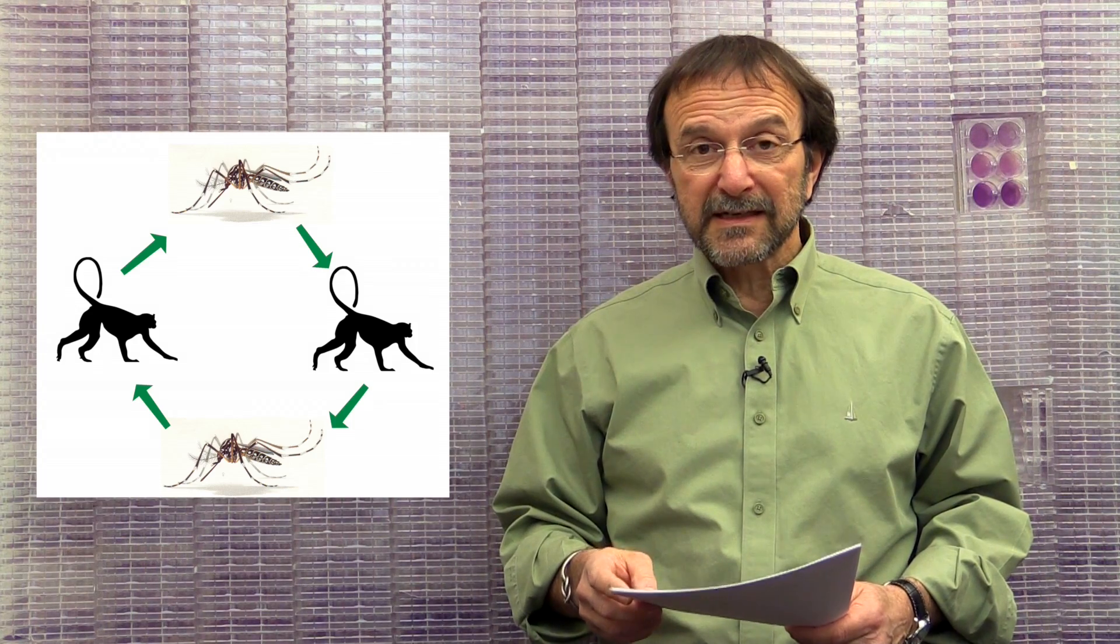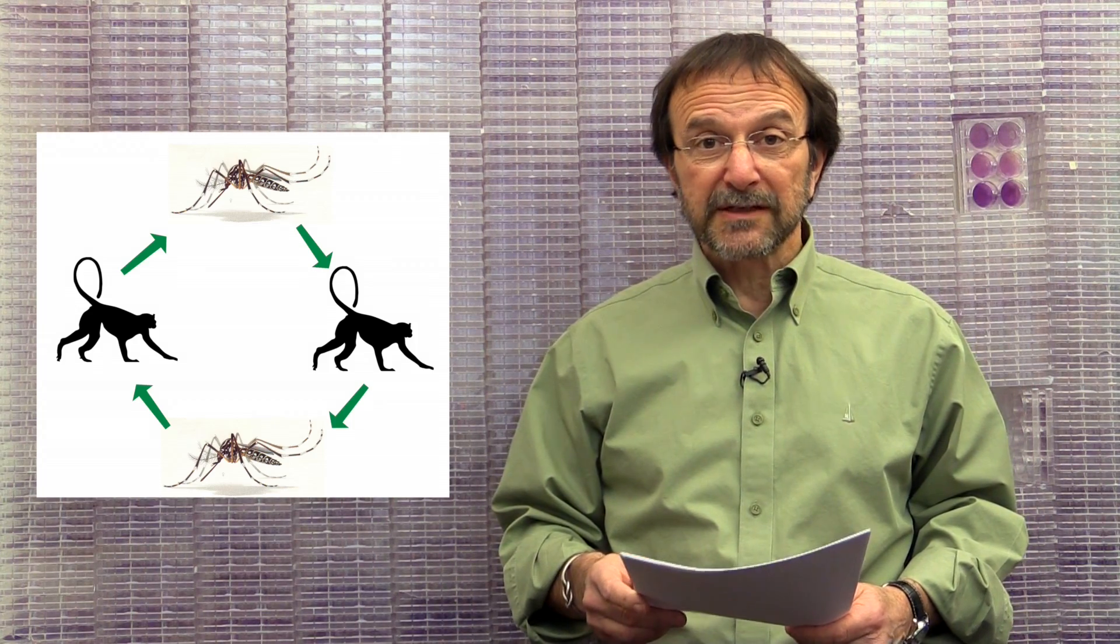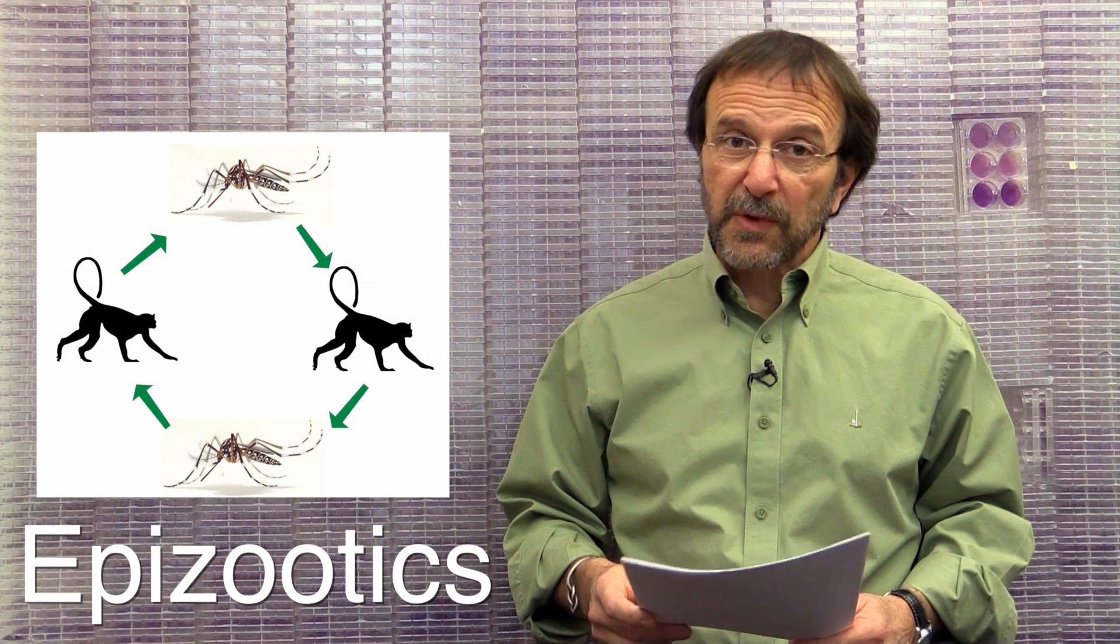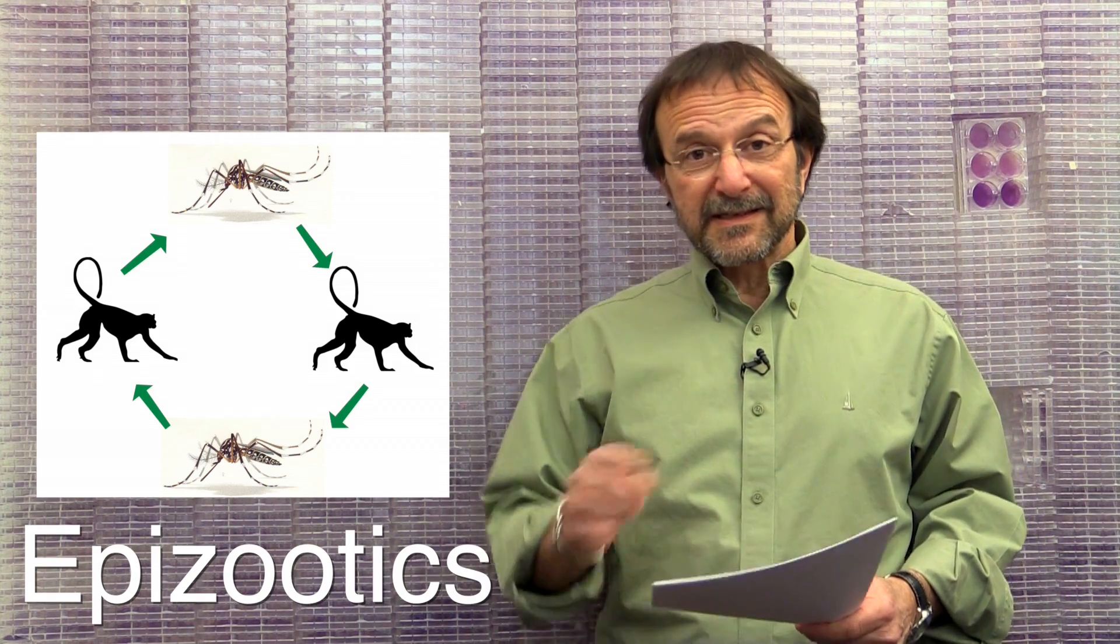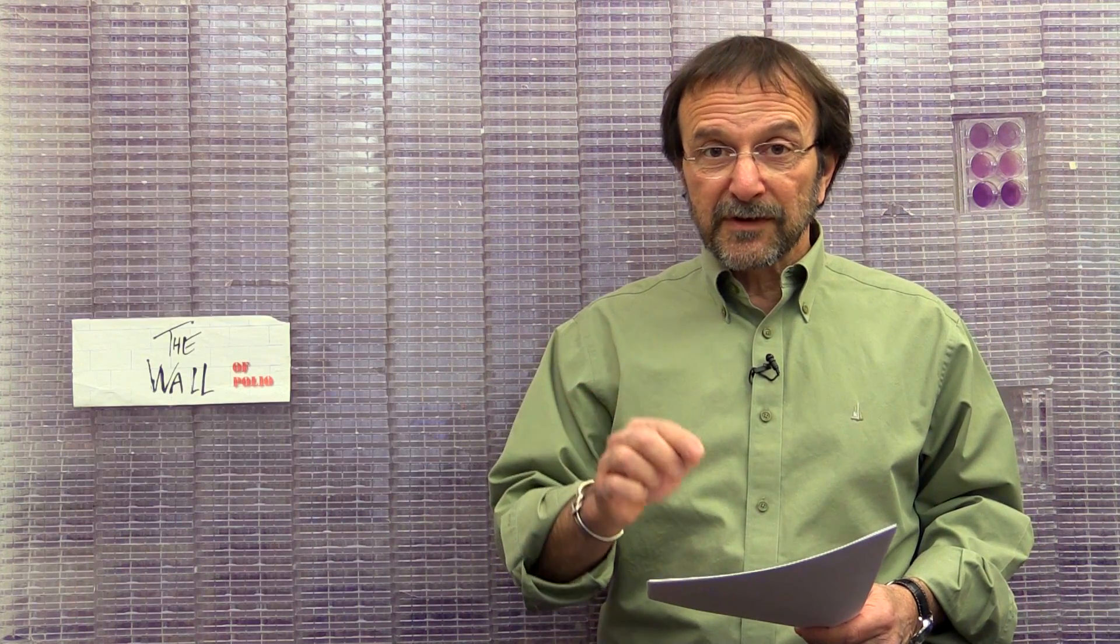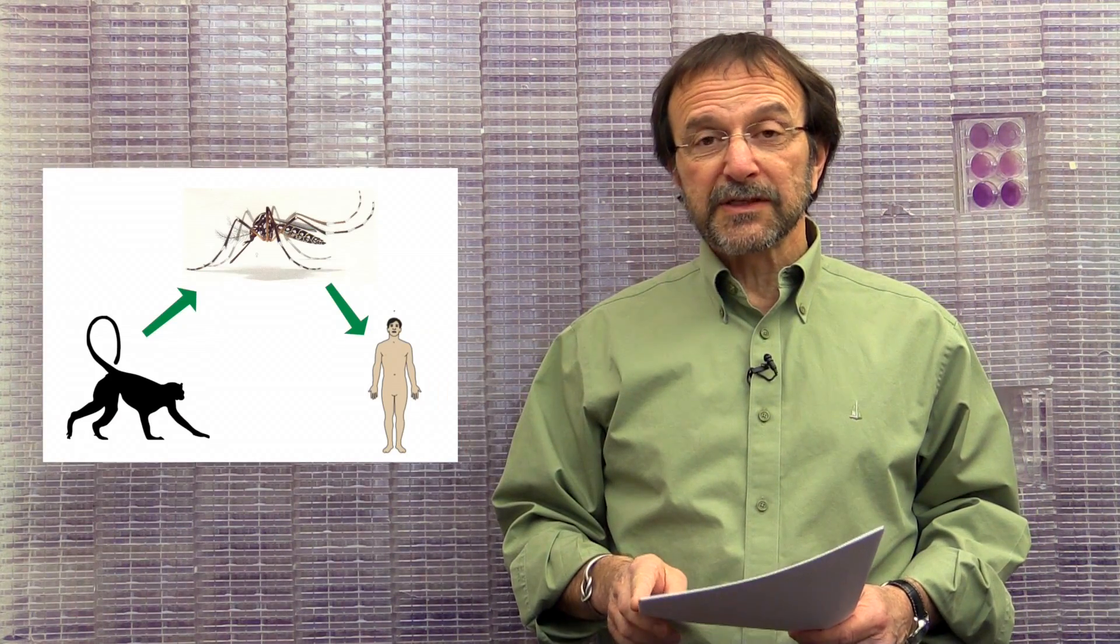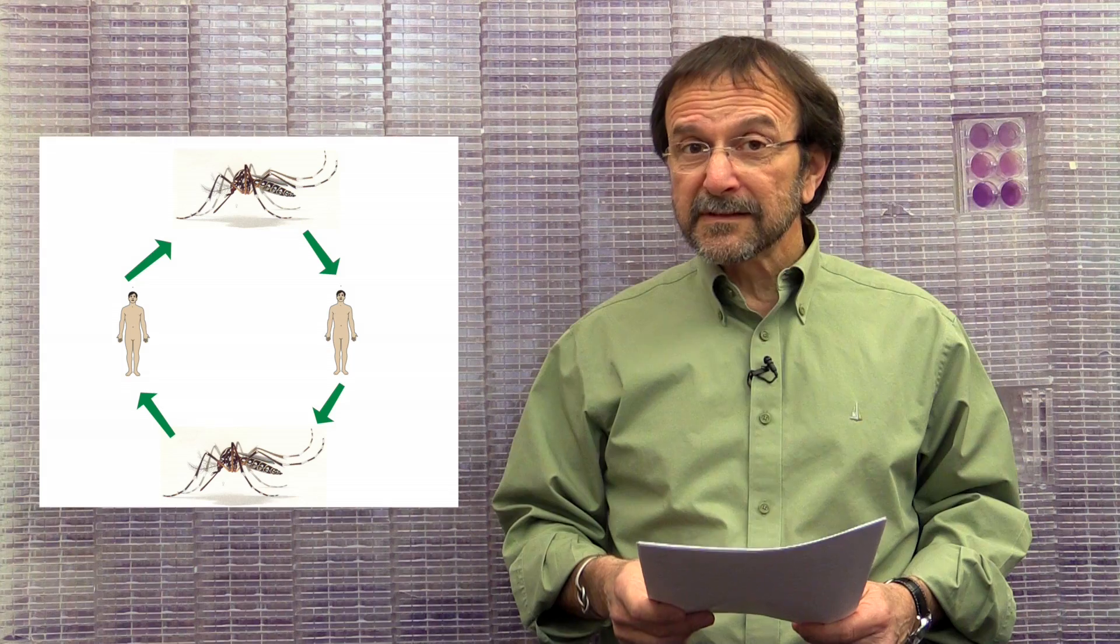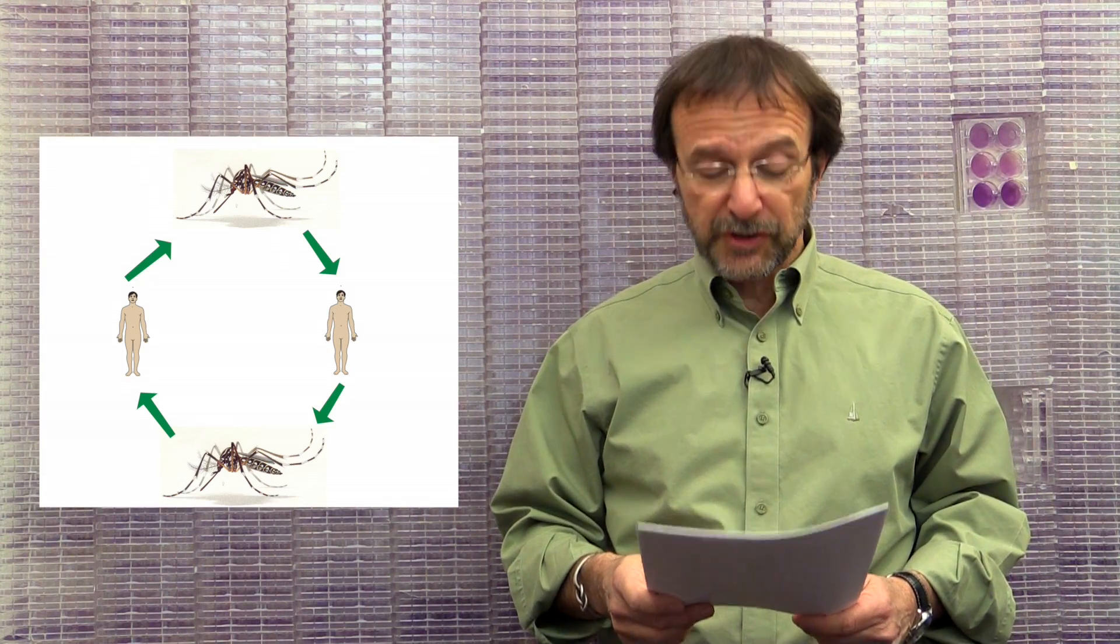We think that Zika transmits in a cycle among monkeys and causes periodic outbreaks of disease, which we call epizootics. This is transmitted by mosquitoes from monkey to monkey, and then it can go from monkey to human by mosquito as well. As we found out later on in the outbreak on Yap Island, where there are no monkeys, the virus can go from human to human.